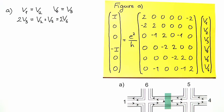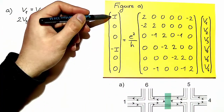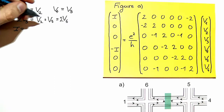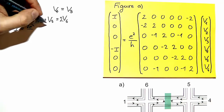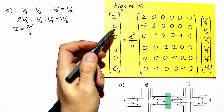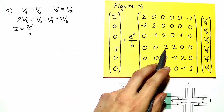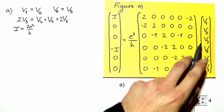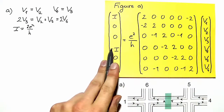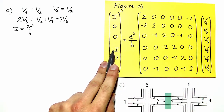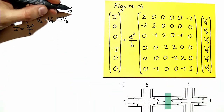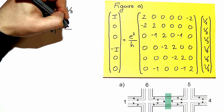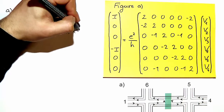We also obtain the relations between current and voltages from row 1 and row 4, where we find that i equals 2e²/h times (v1 minus v6), and taking into account the minus sign, we also have i equal to 2e²/h times (v3 minus v4).